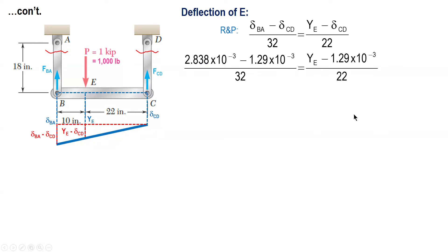And using your calculator, Y sub E is equal to 2.354 times 10 raised to negative 3 inches.